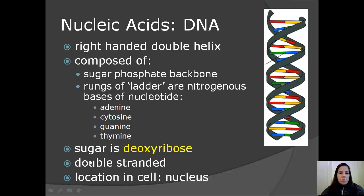Let's move on and get into a good description of DNA. So DNA is a right-handed double helix. It's composed of the sugar-phosphate backbone. And the rungs of the ladder are the nitrogenous bases. And the nitrogenous bases are adenine, cytosine, guanine, and thymine in DNA. The sugar used in DNA is deoxyribose. All DNA is double-stranded. And the location of DNA is in the nucleus of the cell.